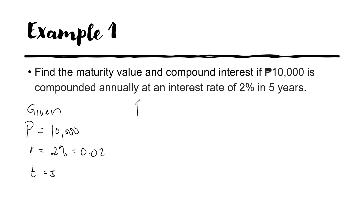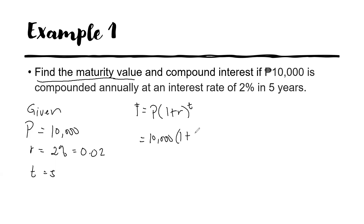Let us find first the future value or the maturity value. The formula for the maturity value is P times 1 plus the rate raised to time. So, the principal is equal to 10,000 times 1 plus 0.02 raised to 5. We have 10,000 times 1.02 raised to 5. You're going to multiply 1.02 five times to itself, or better, use your calculator.